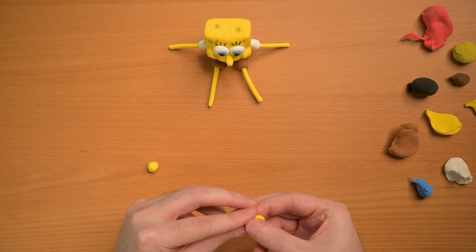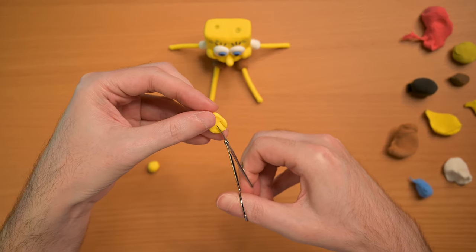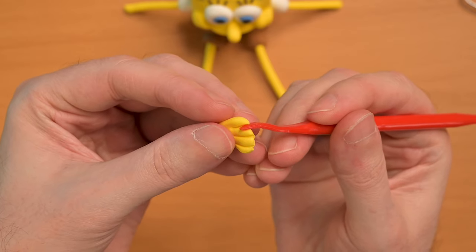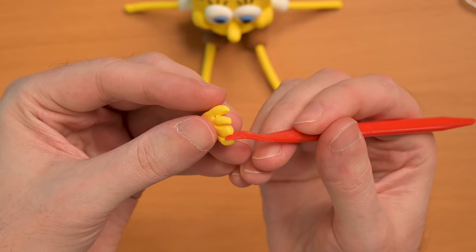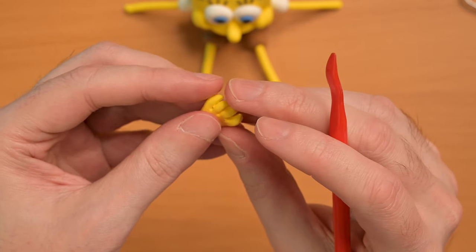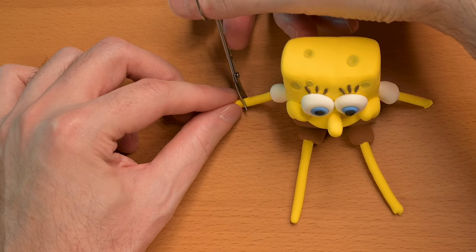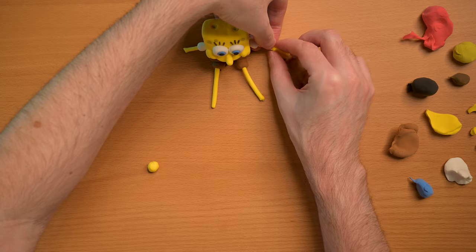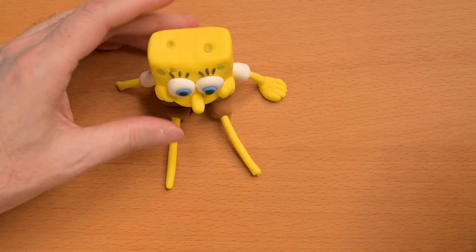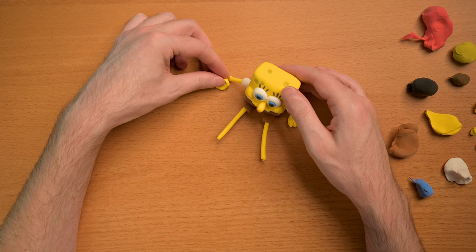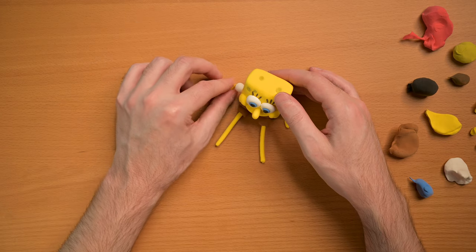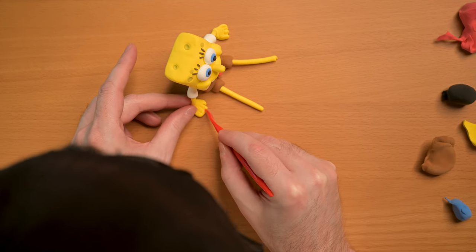And this is the also not so fun part. Hands are always really tough to build. Now we're going to trim his arms down. Now just press the hands in there and just kind of form it around until it looks a little human or, you know, Sponge Bobby.